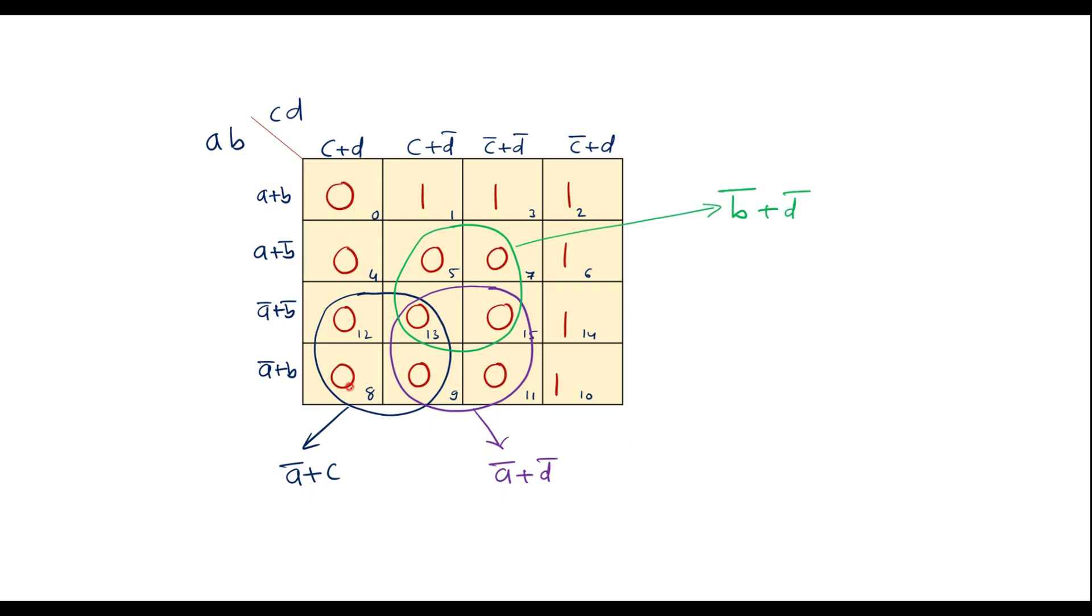This can be a quad. So the value here is, it covers this column. So common variable is c plus d. So thus I can write.